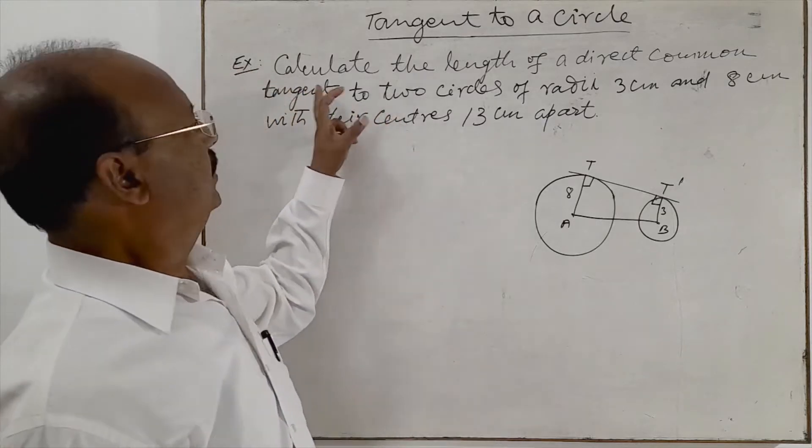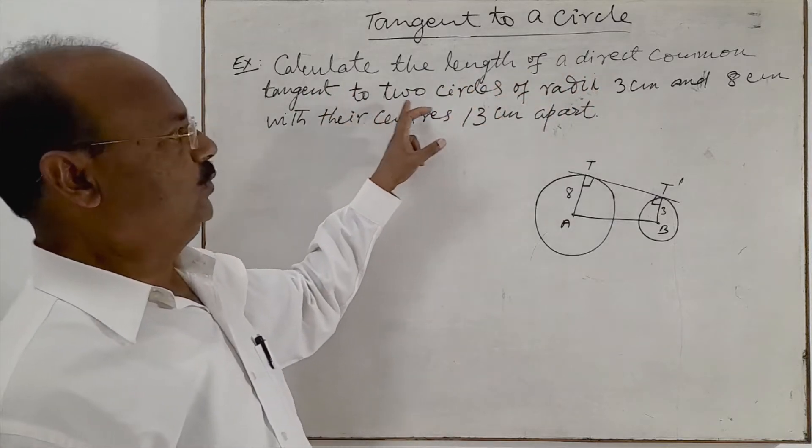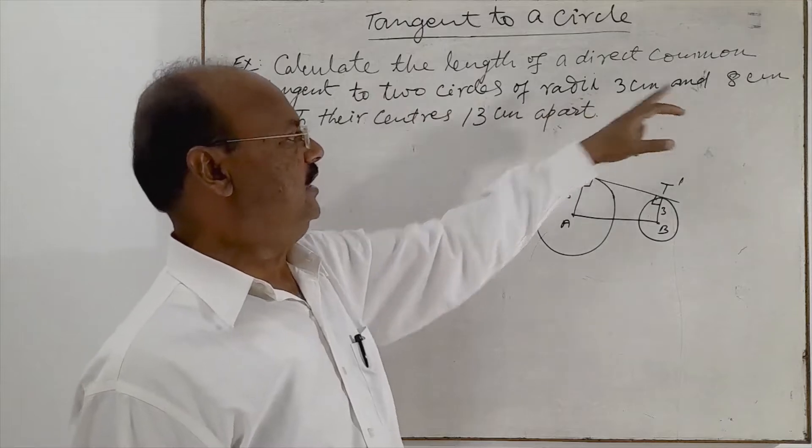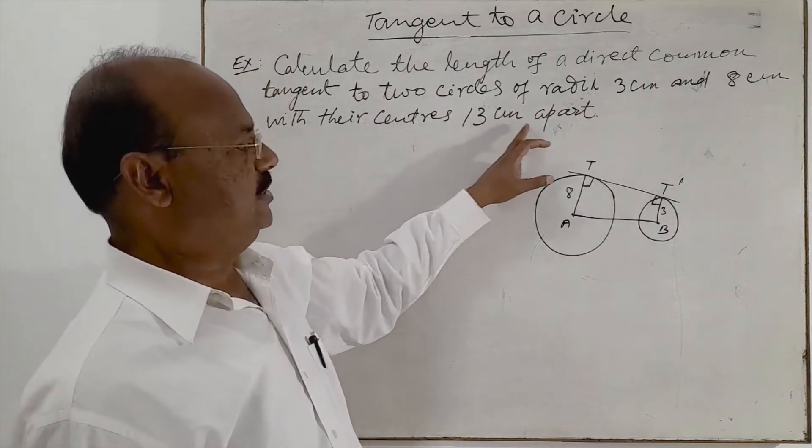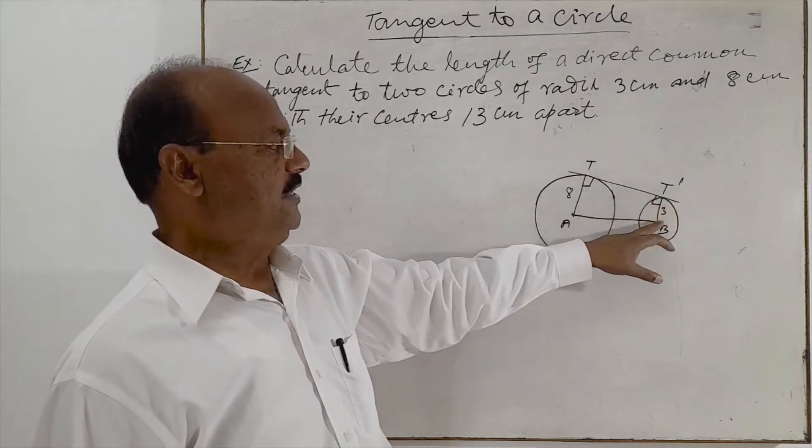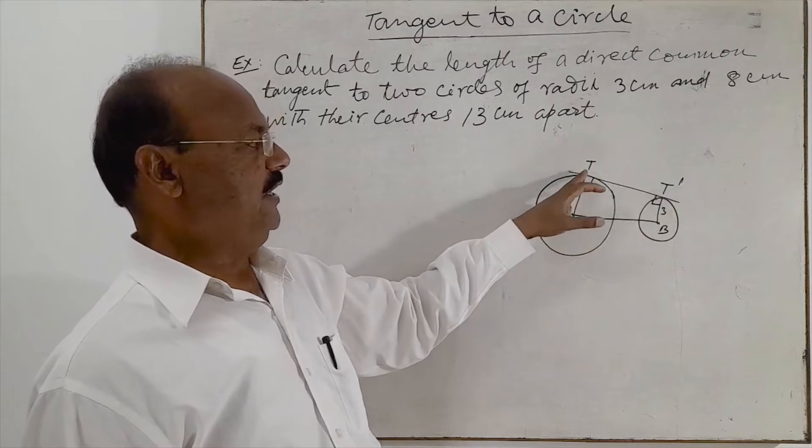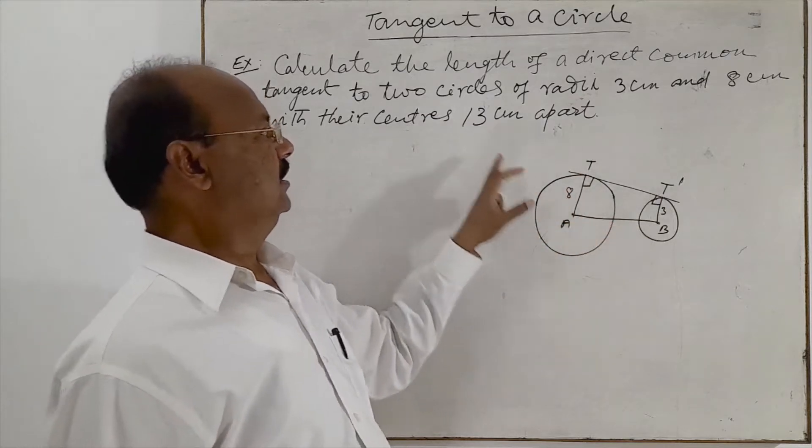The question is: calculate the length of a direct common tangent to two circles of radii 3 cm and 8 cm with their centers 13 cm apart. There are two circles with radii 3 cm and 8 cm and distance between these two centers is 13 cm.